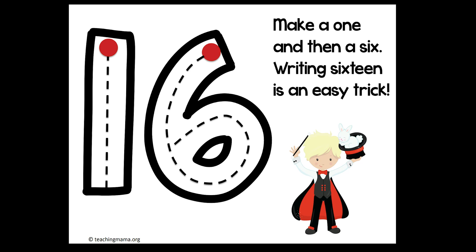Now turn on your magic writing finger. We're going to make our number 16 in the air. Can you do it with me? First we make a 1. Start at the top. Straight line down. And then a 6. Start at the top. Curve down and around and up.